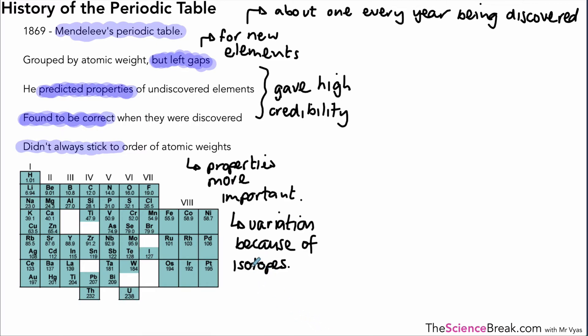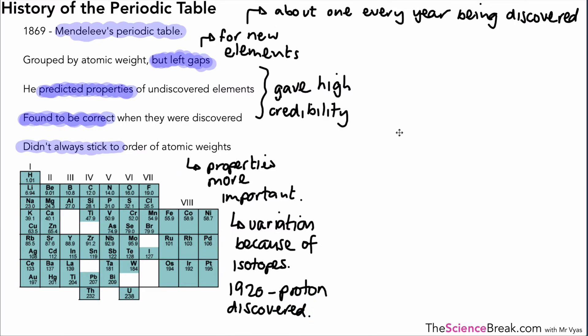Also important to remember that around about the 1920s that's when protons were discovered, so it's quite a long time afterwards, but when the protons were discovered elements were placed in the order of proton number and that took into account the isotopes.